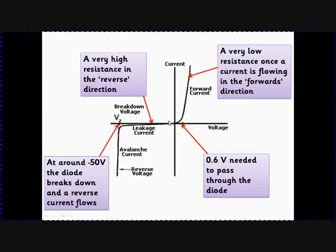In the reverse direction, basically no current until we get to about minus 50 volts. Then the electrons have enough energy to go the wrong way through the diode. But this area here is the important point. Try and remember this number: 0.6 volts to get the diode to open up and let the current through.